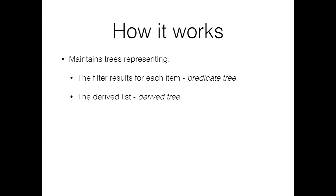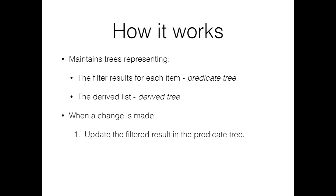The second is a tree that contains the derived result — in this case, the list of completed to-dos. When the source list changes, we update that item's filter result in the predicate result tree. Next, we add or remove nodes in the derived result tree using positioning information in the predicate tree.